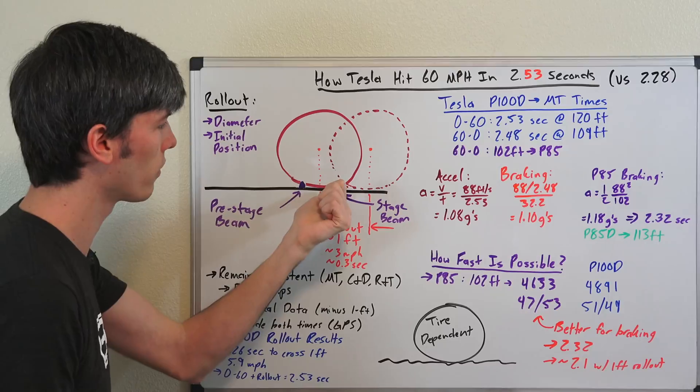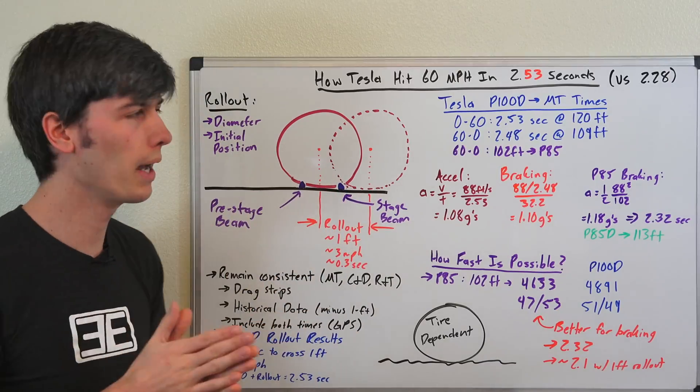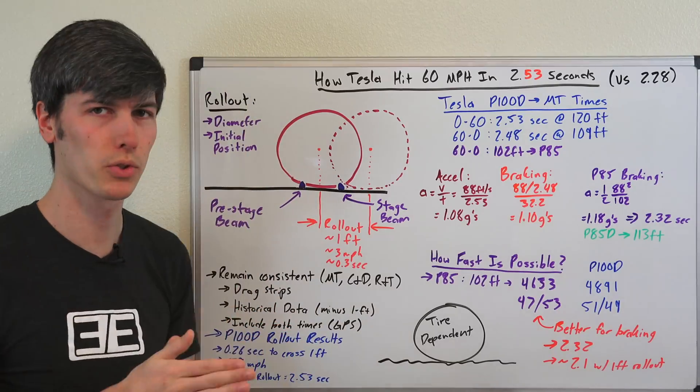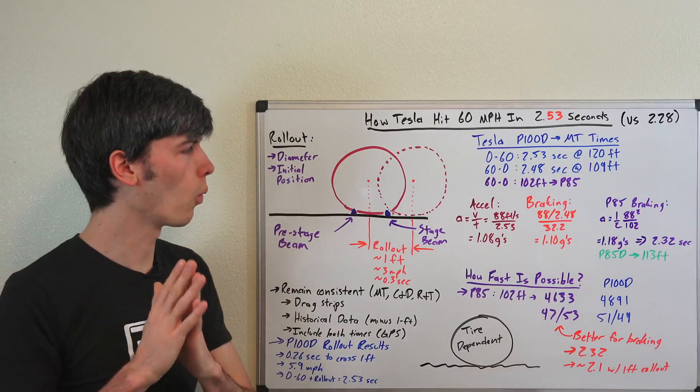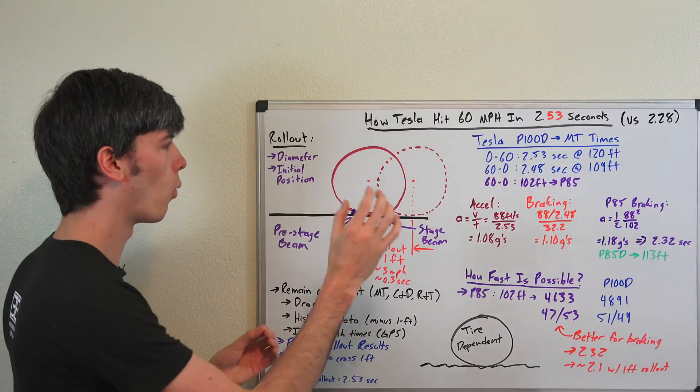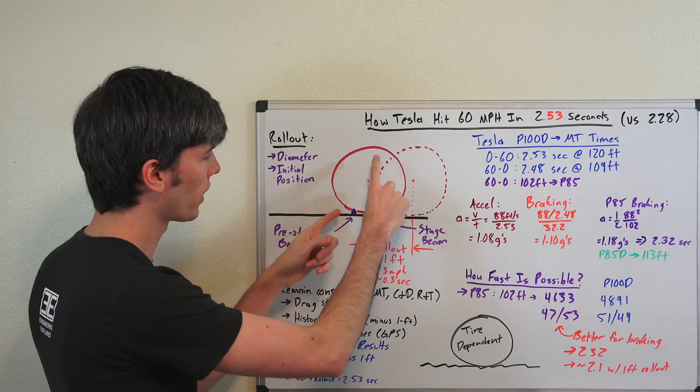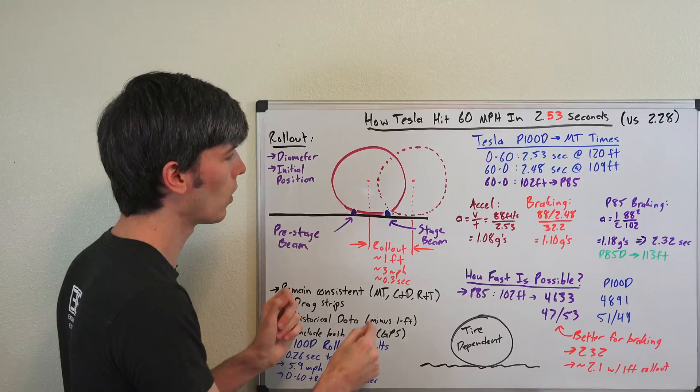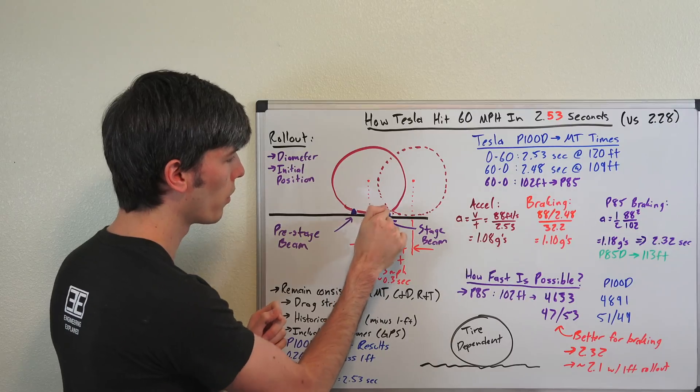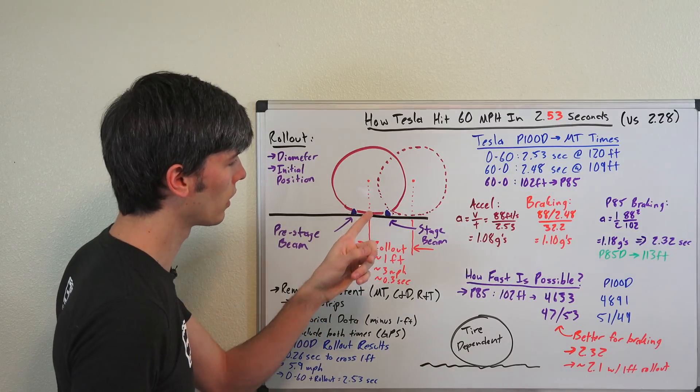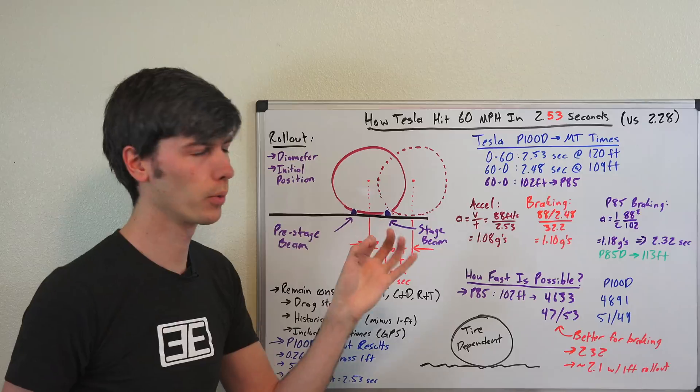Then you're going to continue to roll your car up until you hit that stage beam. There'll be a light that lets you know you're staged, you're in the right spot, don't move and wait for the Christmas tree to go down so you know when to start your race. So where this one foot number came from, once the lights tell you to go, what's going to happen is you're going to start moving and the clock does not start until this stage beam is no longer pointing on your tire. So once there's a clear path for this stage beam, that's when it starts the clock.